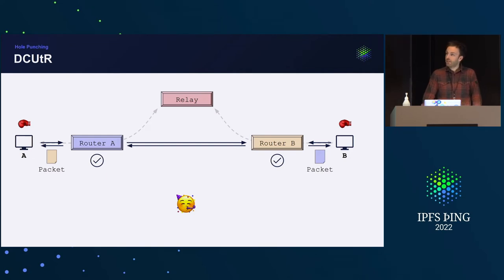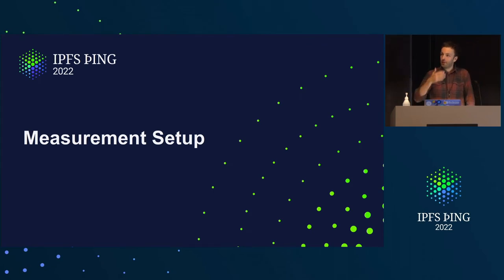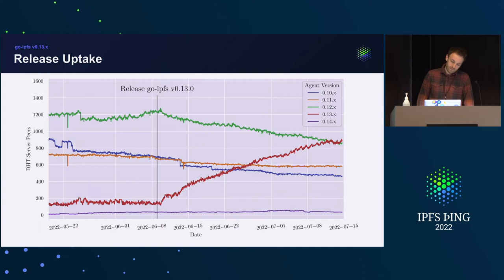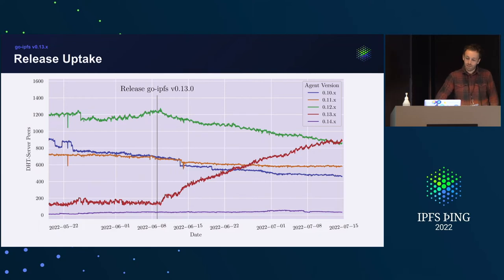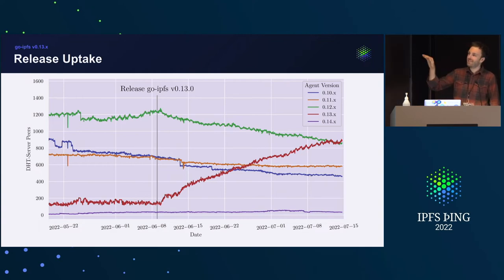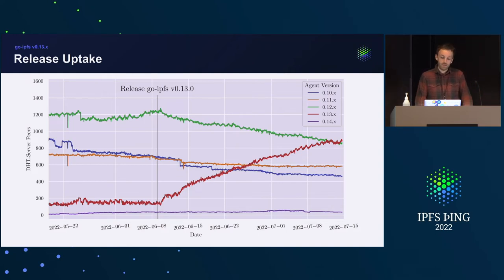This is now deployed — so how do we measure it? Looking at the agent version uptake: on the x-axis we have the date, on the y-axis the number of DHT server peers, and each line corresponds to a recent agent version from 0.10 to 0.14. After Kubo version 0.13 was released there's a steady increase of DHT server peers, roughly corresponding to one new DHT server peer per hour.